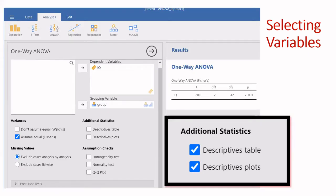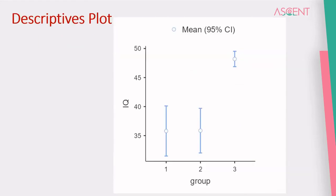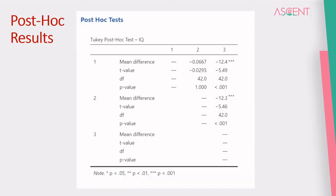There are options for showing additional statistics such as descriptives tables and plots of the descriptives. Density plots tell us in a visual manner how the groups are different from each other. There are also options for post hoc tests for ANOVA. For equal variances, we have the Tukey test, and for unequal variances, there's the Games-Howell test. The mean differences and other test results can also be shown in the post hoc results.